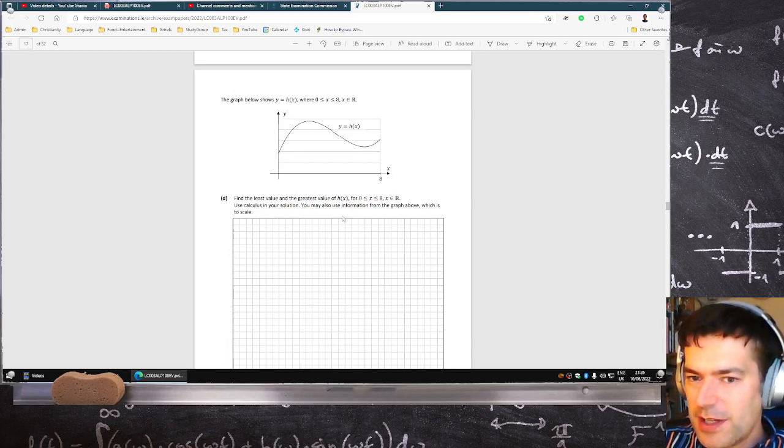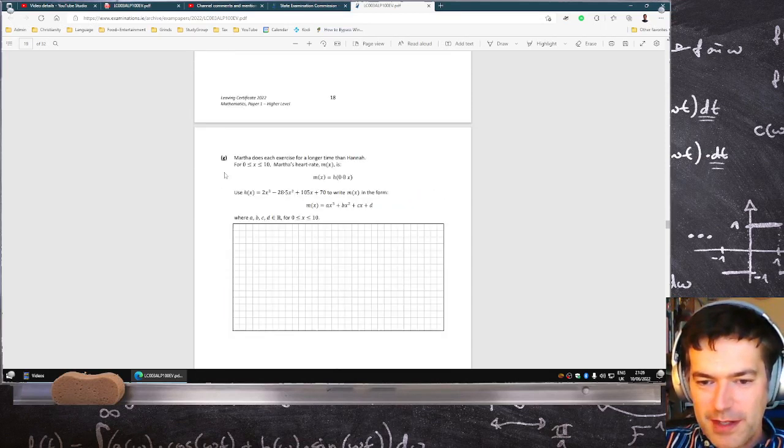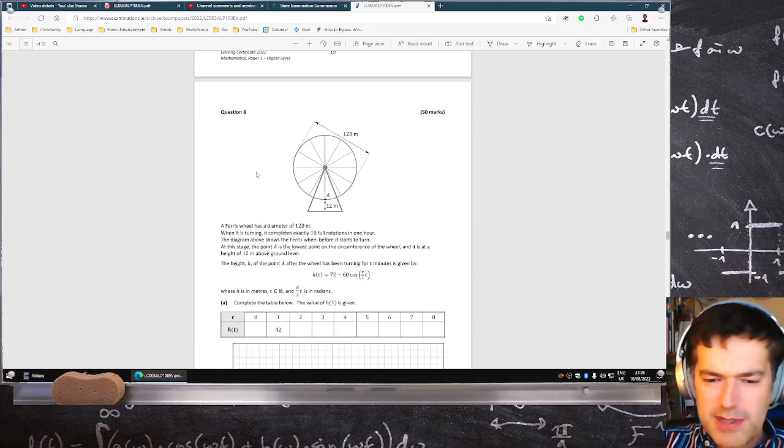So they did this deliberately to trick people, I feel. There's the max, there's the min, go ahead and use calculus to get it. Oh, by the way, this graph is to scale, and you're supposed to notice that this point here is below this point. Very uncool. That was one issue I wasn't happy with.